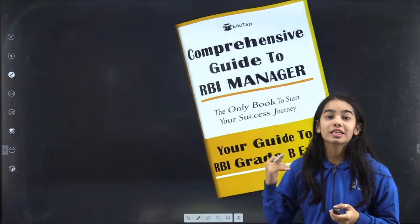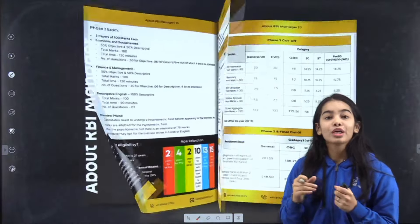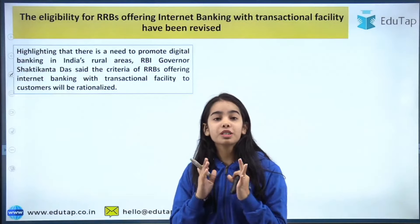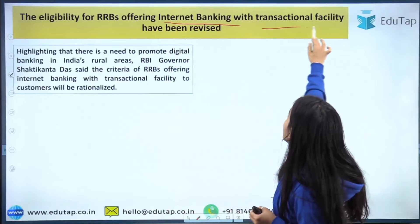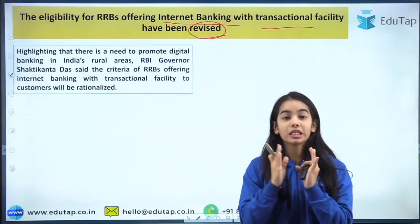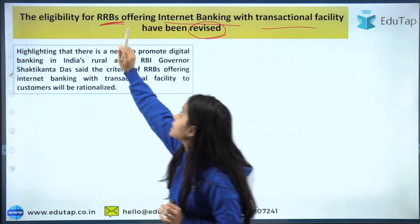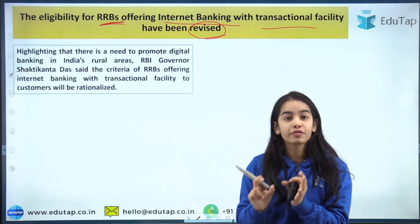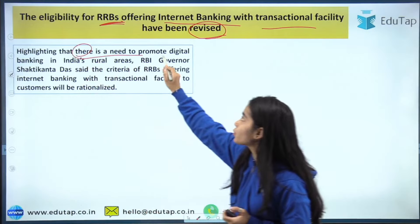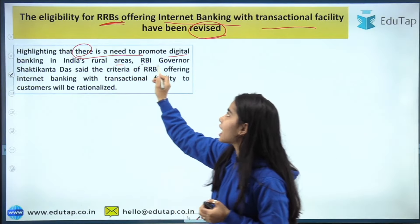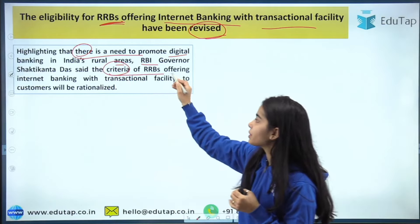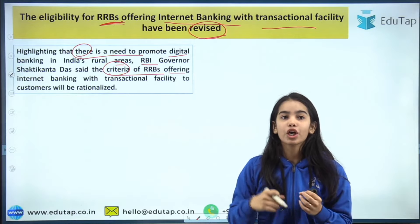Now starting with the news article — the RBI notification. The eligibility for RRBs offering internet banking with transactional facility has been revised. The RBI Governor, Shaktikanta Das, said in September that the criteria for RRBs offering internet banking with transactional facility to customers will be rationalized.